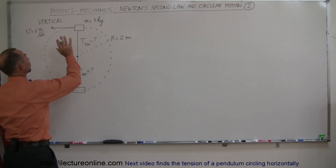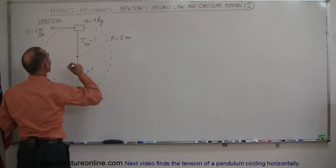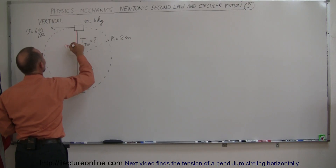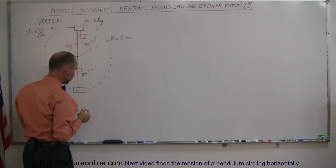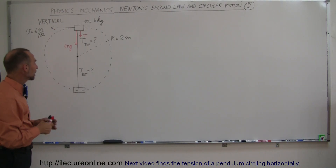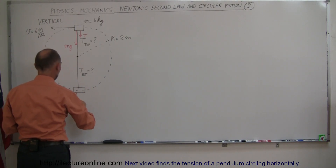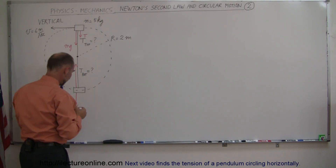What are all the forces acting on the object when it's at the top? We have the force due to gravity, which is Mg, and then we have potentially some tension in the string — or cable, or bar — pulling down on it as well. Those would be the only two forces acting on it. At the bottom, we have the force due to gravity, Mg, and then the tension pulling in the opposite direction — upward.